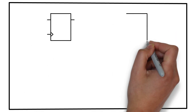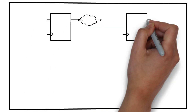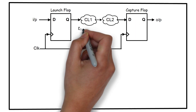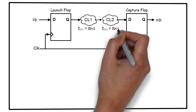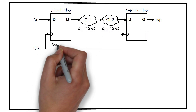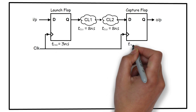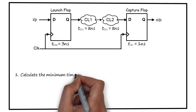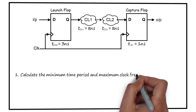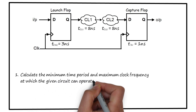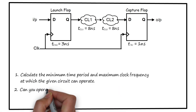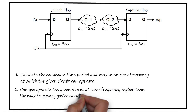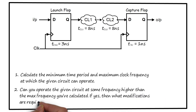You are given a part of a circuit having a launch flop, a capture flop, and some combinational logic in between, which is split into two combinational logics each having a delay of 8 ns. The clock-to-Q delay of the flip flops is 3 ns and the setup time is 1 ns. First, calculate the minimum time period and maximum clock frequency at which the circuit can operate. Second, whether you can operate the circuit at a frequency higher than the maximum calculated — and if yes, what modifications are required.